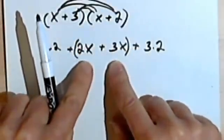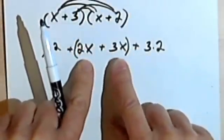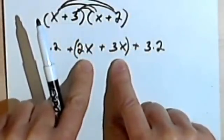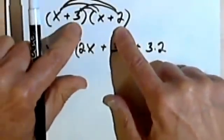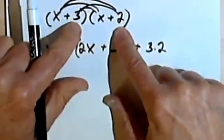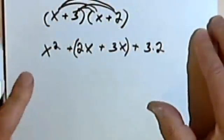And what we're going to get in the middle, I've got a 2x plus a 3x, is what we get when we add the second terms together. So bear that in mind. I'm going to leave this here.